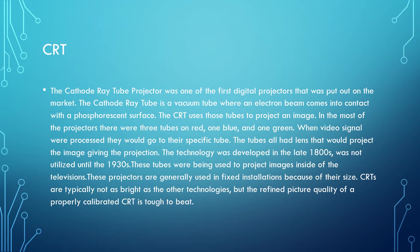What are CRT? CRT stands for cathode ray tube projectors. They are one of the first digital projectors put out on the market. The cathode ray tube is a vacuum tube where an electron beam comes into contact with a phosphorescent surface. The CRT uses those tubes to project an image. In most projectors, there were three tubes — one for red, one for blue, and one for green. When video signals were processed, they would go to their specific tube. The tubes all had lenses that would project the image, giving the projection.